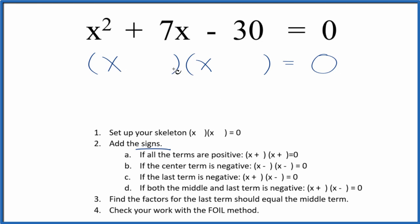Now we can add the signs into our skeleton equation. We have a positive and a negative. If the last term is negative, we're going to put a positive and a negative in our skeleton equation.